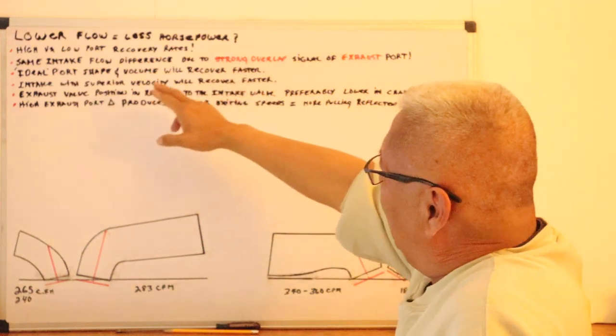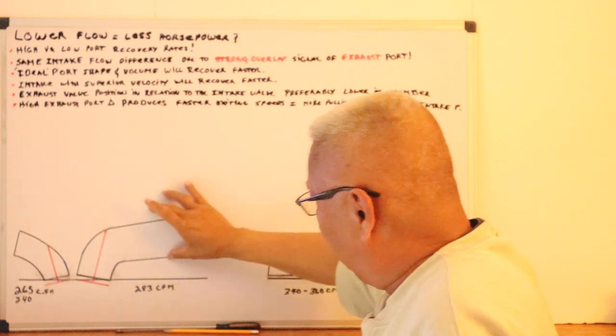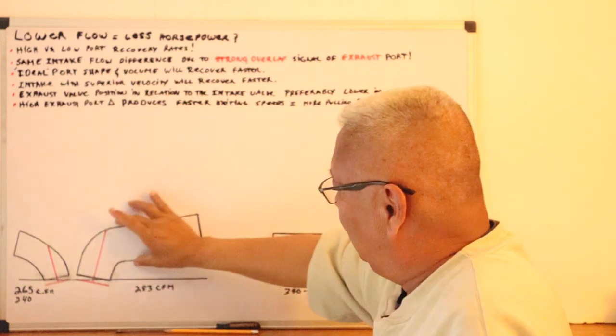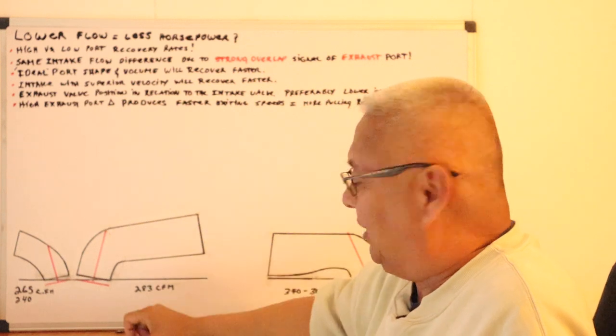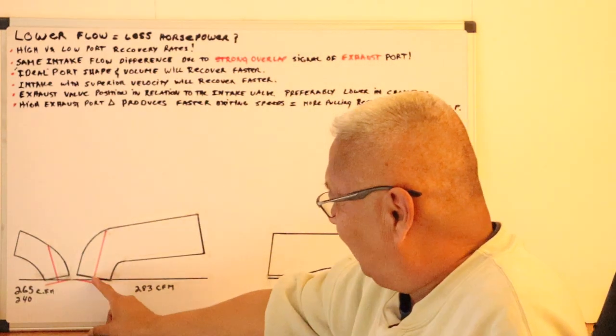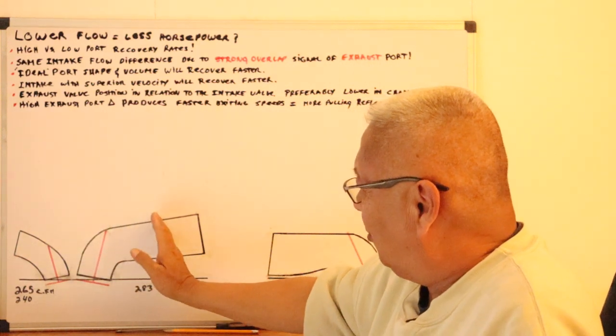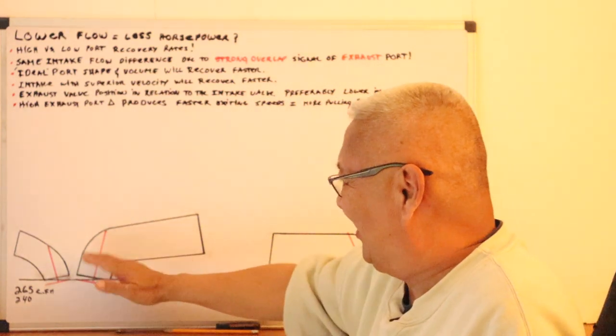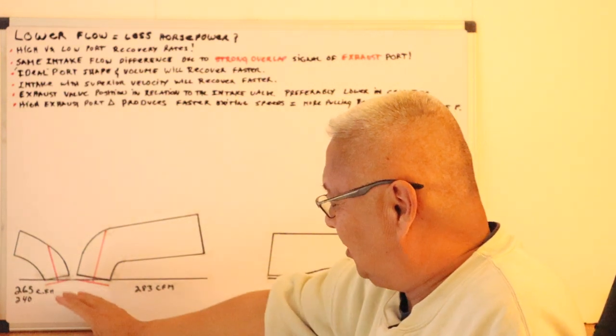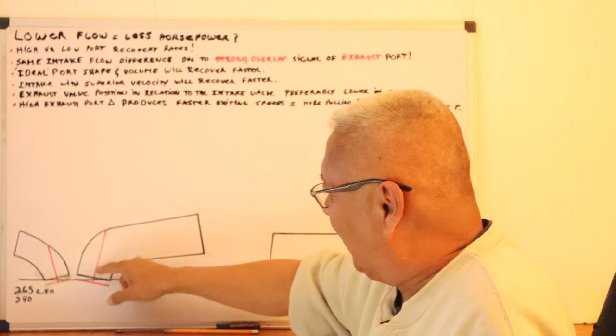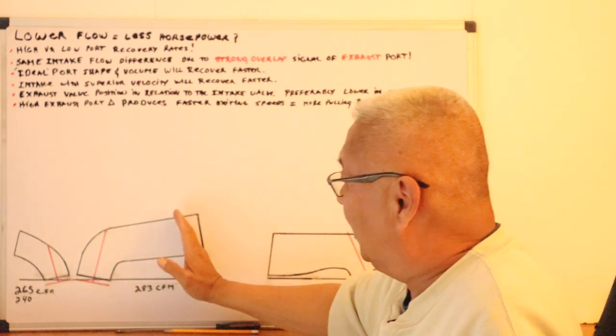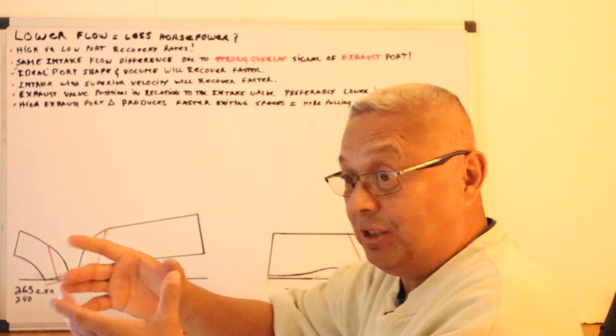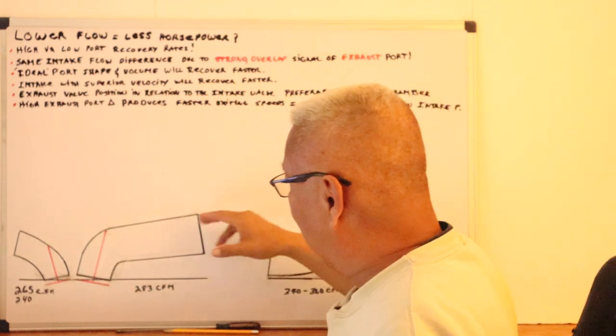Now, ideal port shape and volume will recover faster. If this port was way too big, even though there's a high port angle, if it's big, big port means slower airspeed. Slower airspeed means as soon as that valve closes, the stacking or the recovery gets slower. Now, if it's the ideal port, perfect for the CID that you're running, it will recover fast and stacks up. But if the port is too big, the signal is slow. The airspeed is slower. Big ports, everything just slows down.